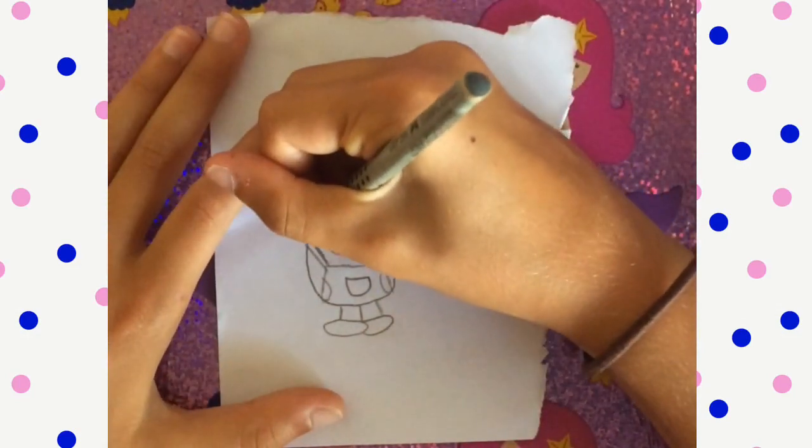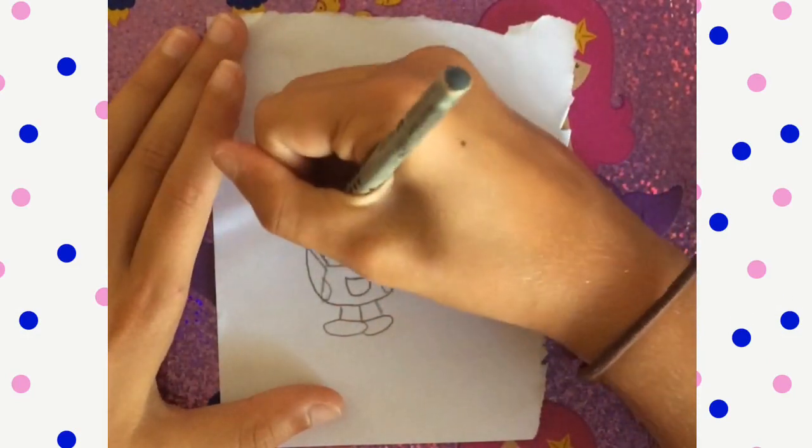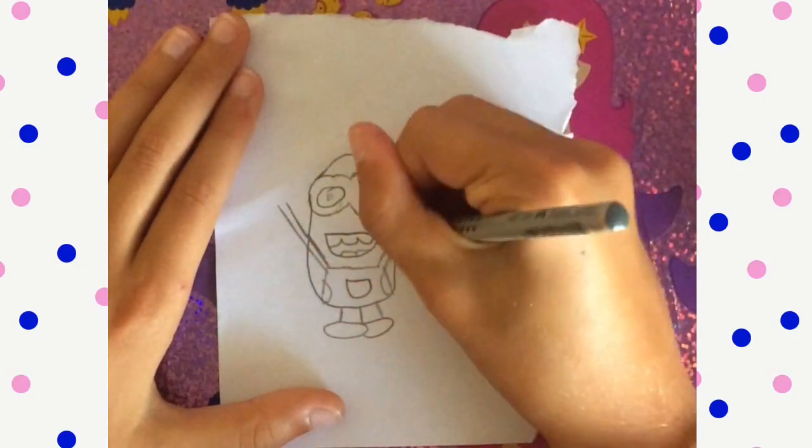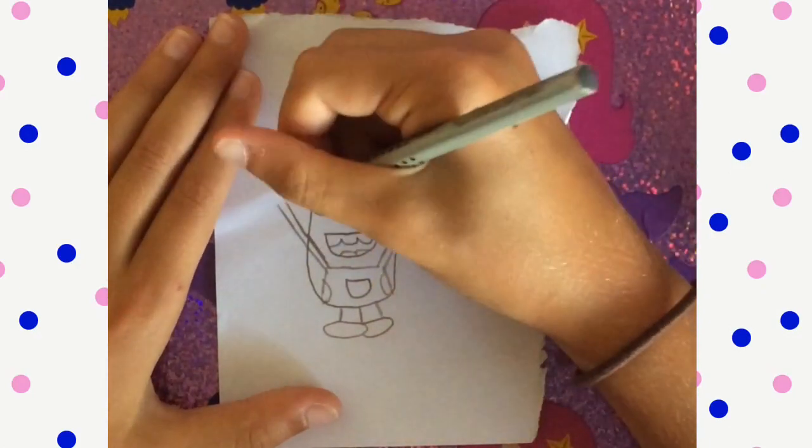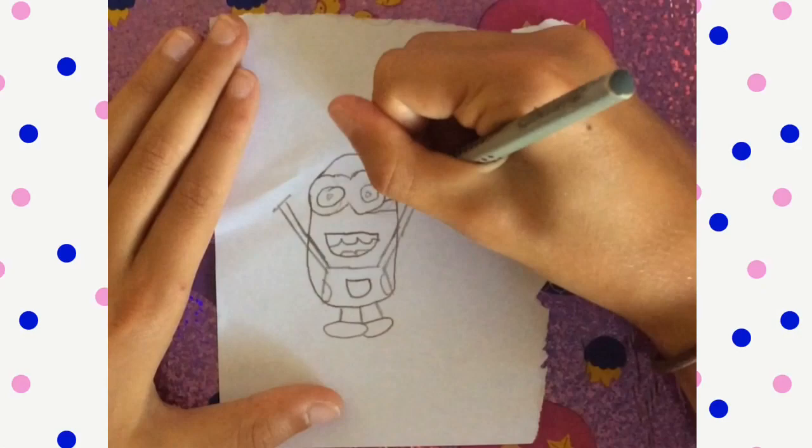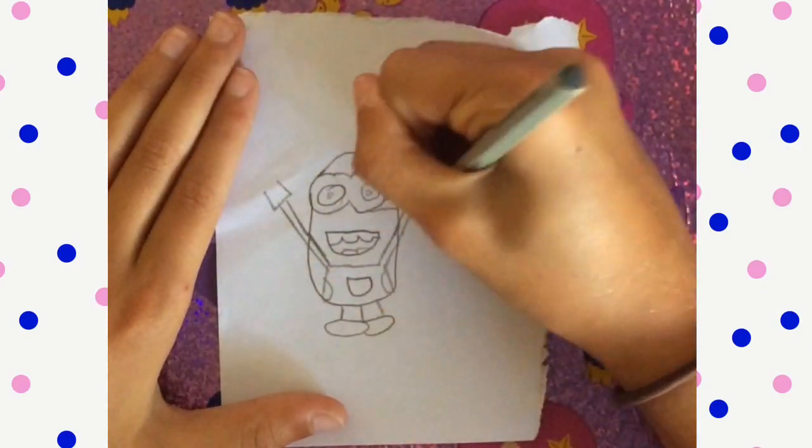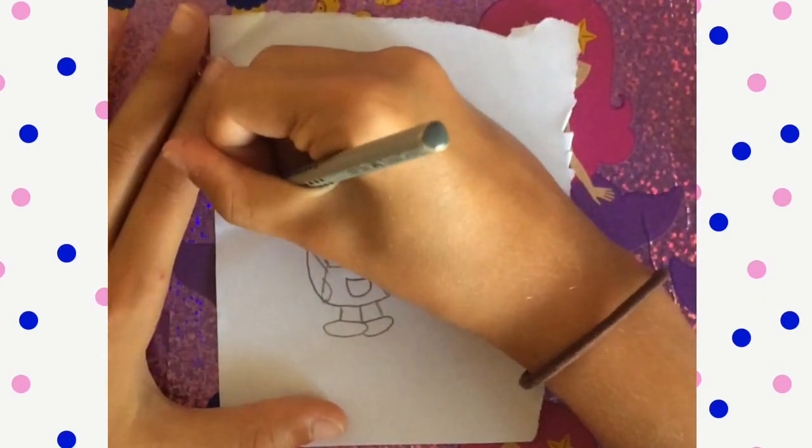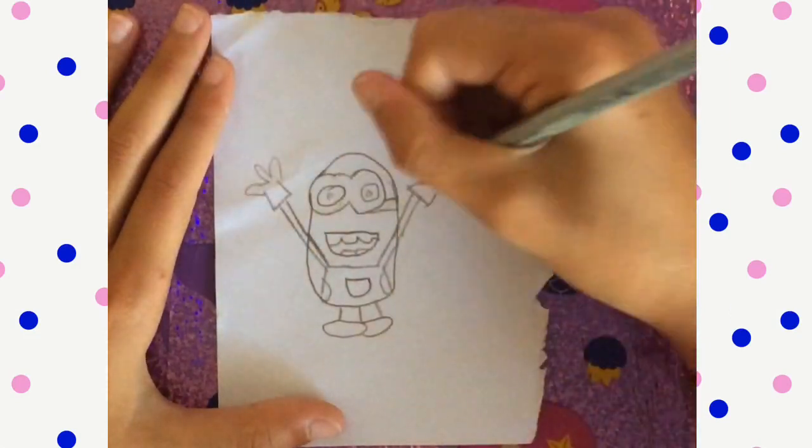Next we are going to draw the arms so from the line you are going to draw two straight lines coming back out and then you are going to draw a line from the bottom. Then you are going to come up and then you are going to draw three fingers.